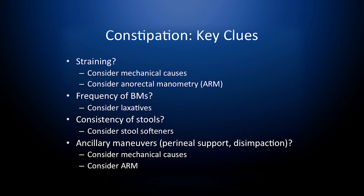Some key clues to evaluate constipation include: does the patient have straining? If so, consider mechanical causes or anorectal manometry. Does the patient have infrequent bowel movements? If so, consider laxatives. What is the consistency of the stools? Consider stool softeners. And does the patient use ancillary maneuvers such as perianal support or manual disimpaction? Consider mechanical causes or anorectal manometry to evaluate pelvic causes.